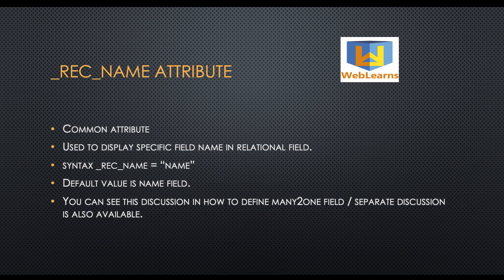The underscore rec_name attribute is widely used when you want to display a specific field in a relational field, such as a Many2one field. The default value is the name field. If your model does not have a name field, by default it will use the ID plus the object name. In that case, use underscore rec_name equal to the field you want to display.